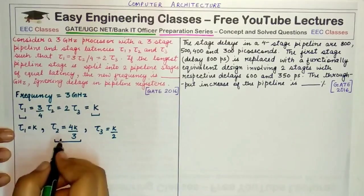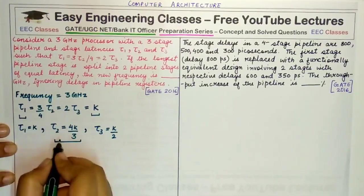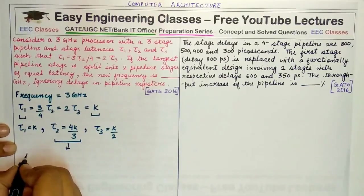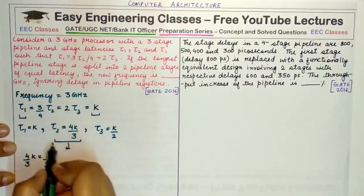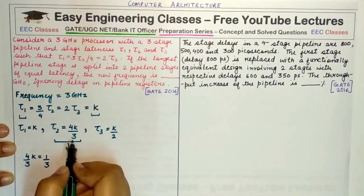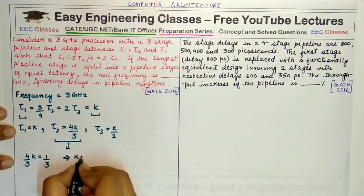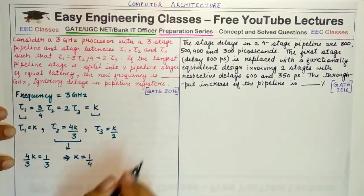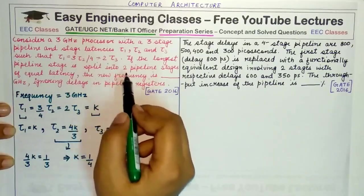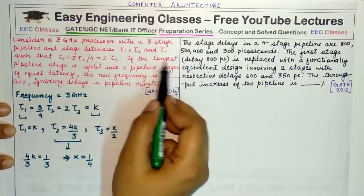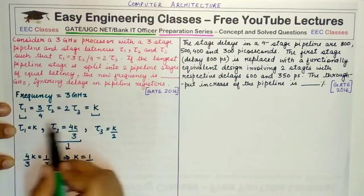The maximum latency τ2 = 4k/3 determines the frequency. Inverting the frequency: 4k/3 = 1/3 (since frequency is 3 GHz), giving k = 1/4. This completes the first part. The second part says the longest pipeline stage τ2 is split into two equal stages. The new stages are: τ1' = k, τ2' = 2k/3, τ3' = 2k/3, τ4' = k/2.